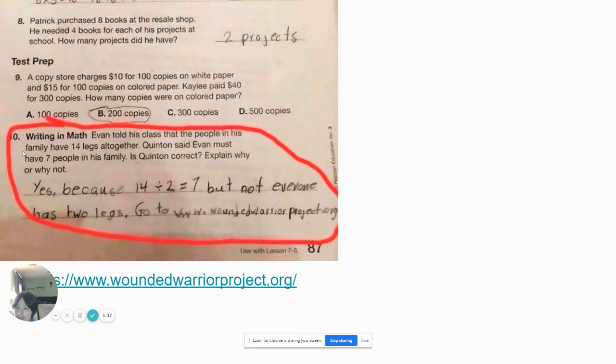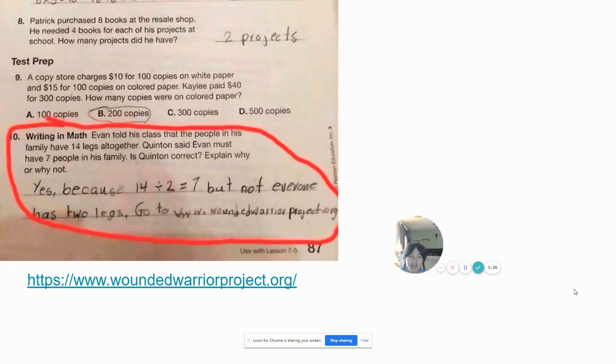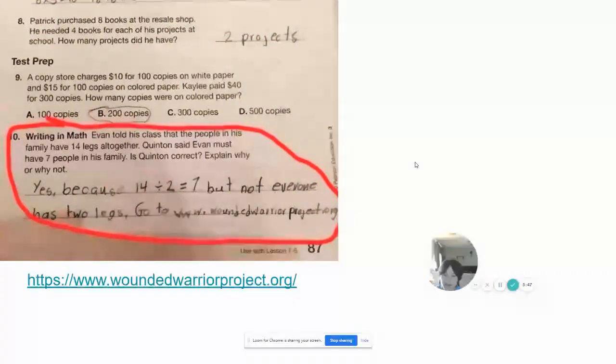Alright. Evan told his class that the people in his family have 14 legs all together. Quentin said Evan must have 7 people in his family. Is Quentin correct? Explain why not. Yes, because 14 divided by 2 is 7, but not everyone has 2 legs. Go to www.woundedwarriorproject.org. And guys, in case you didn't know, I did find an actual website. Here's the link right here. I can also give it to you guys in the description. I searched it up and it actually shows what this kid was talking about. But it was kind of funny how he just put a link on there.